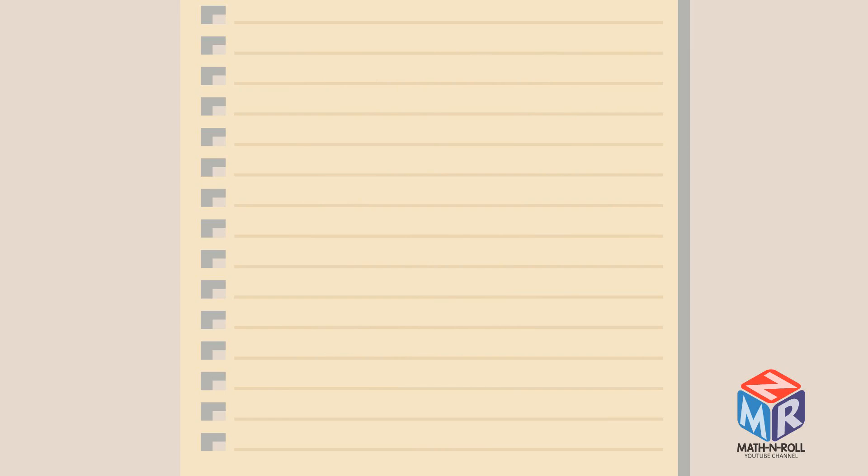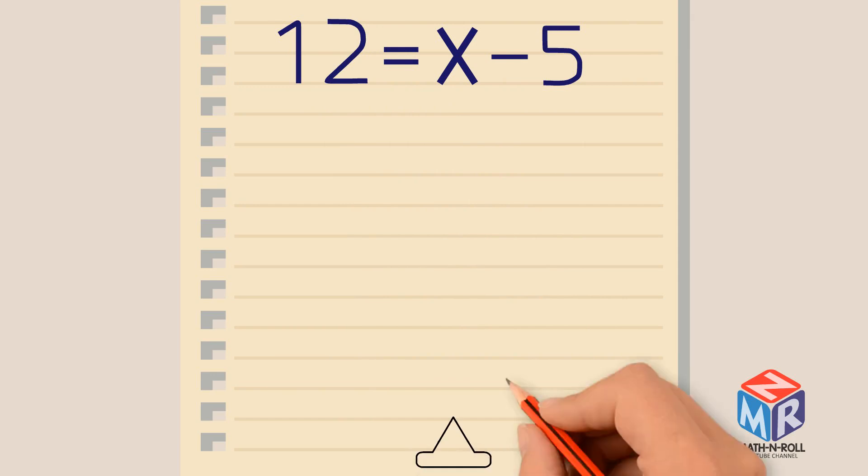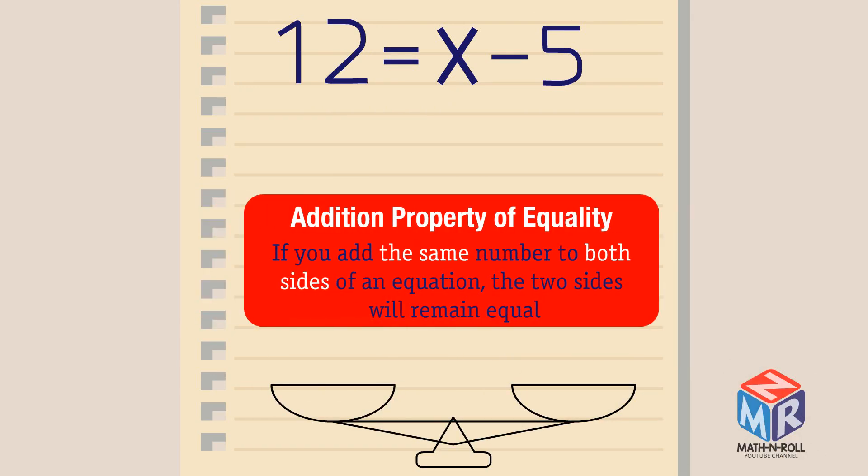Let's try another example. 12 equals x minus 5. For this equation, we will be using the addition property of equality. If you add the same number to both sides of the equation, the two sides will remain equal.